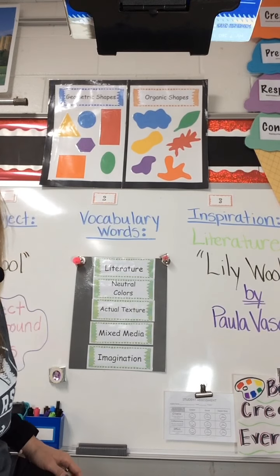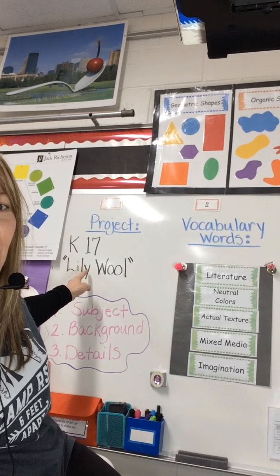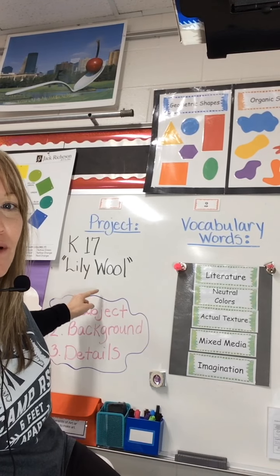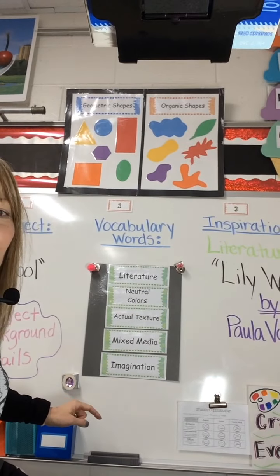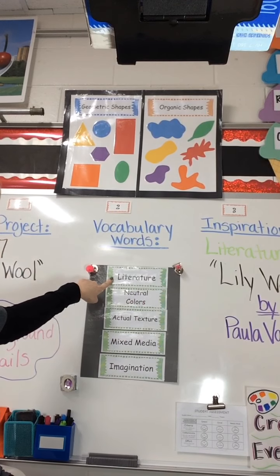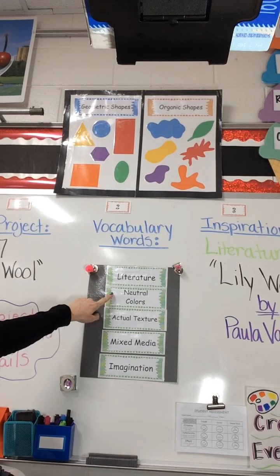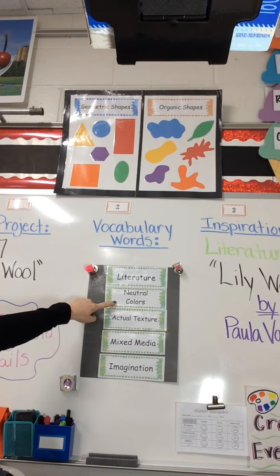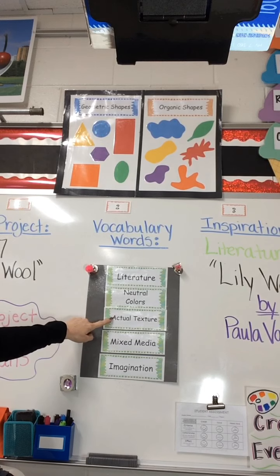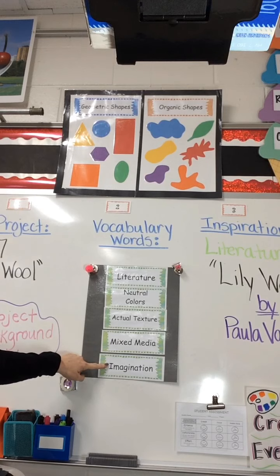We're on K17. Our vocab words today are literature, because Lily Wool is a book, and I'll tell you more about that in a minute. We're going to talk about neutral colors, actual texture, mixed media, and imagination.